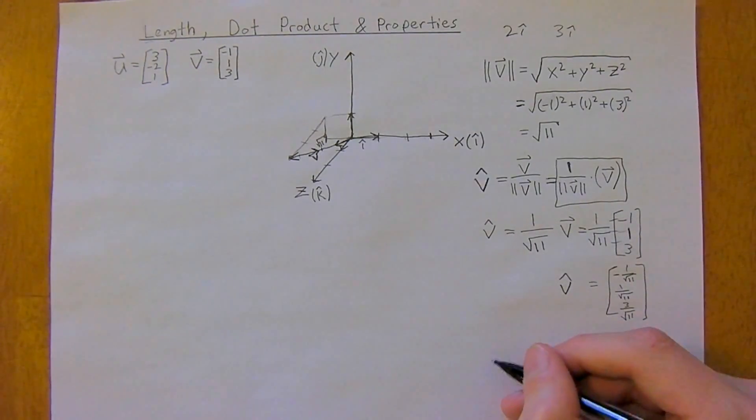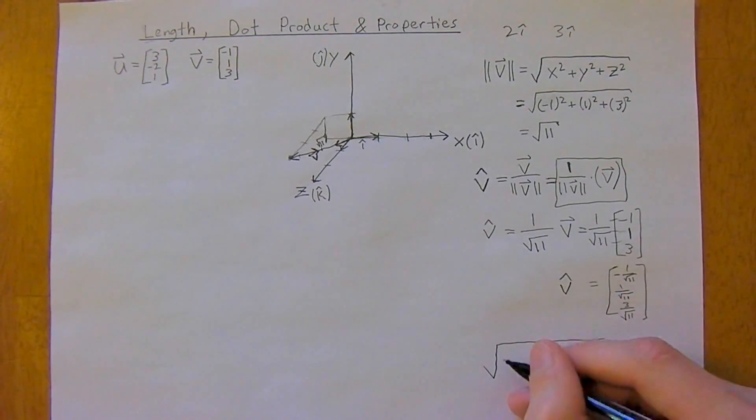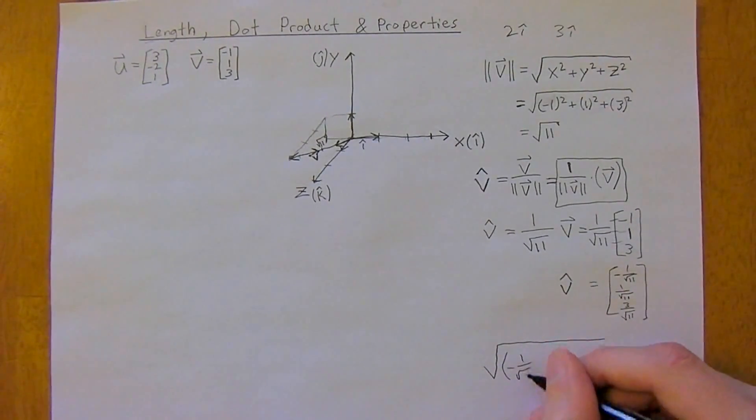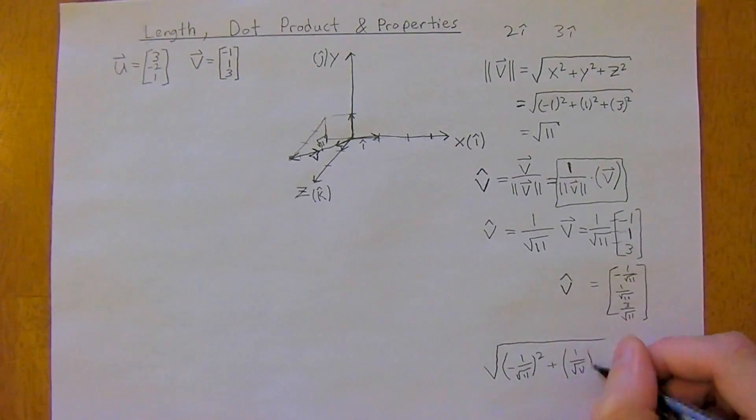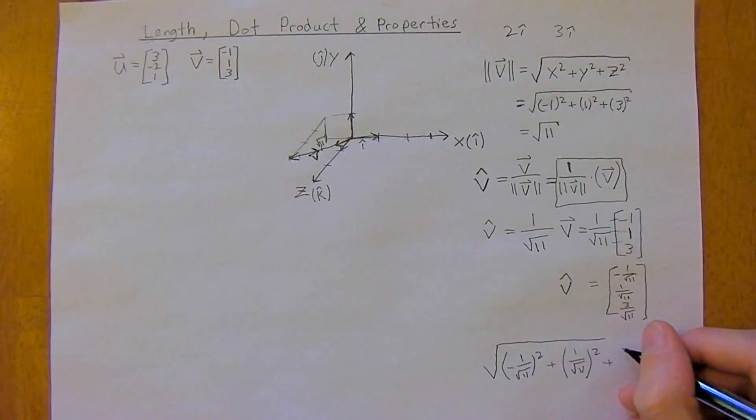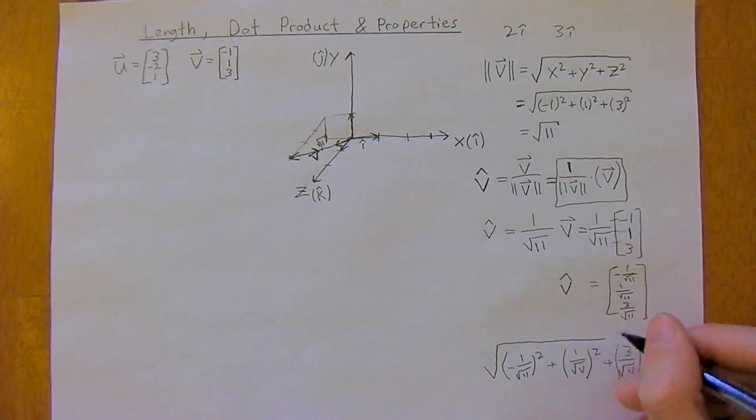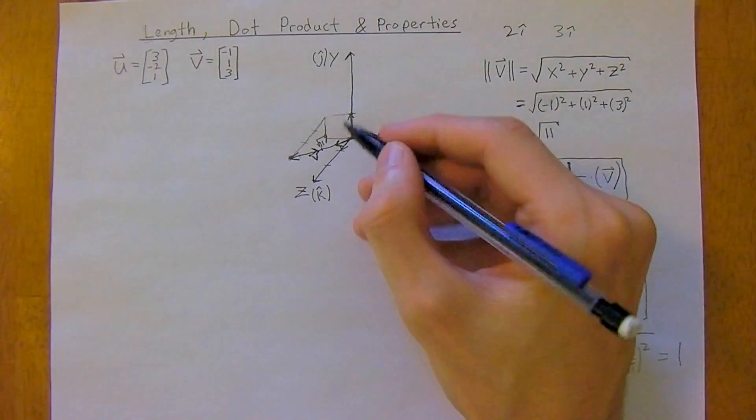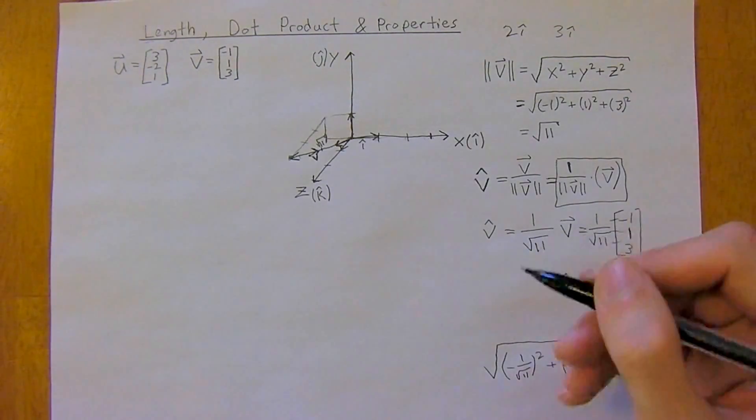And if you were to plug this back into a Pythagoras theorem, you would actually find out that you'd have 1 over root 11 squared plus 1 over root 11 squared plus 3 over root 11 squared. And this would be equal to 1. So all we're saying is we found the unit vector with a length of 1 in the direction of v. So now to get into the dot product.